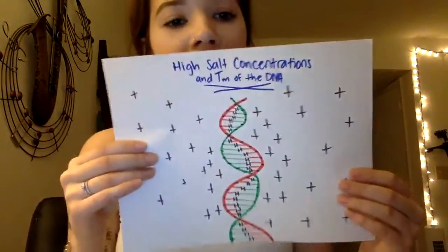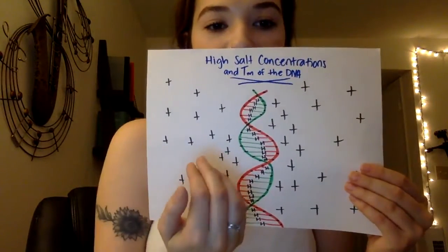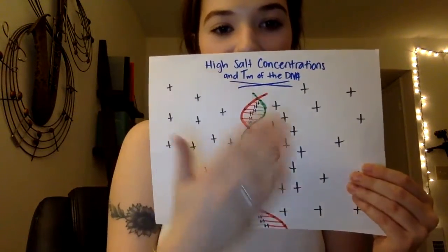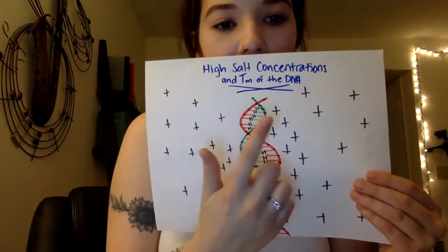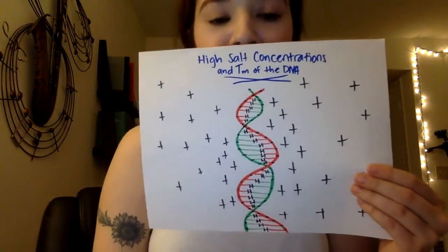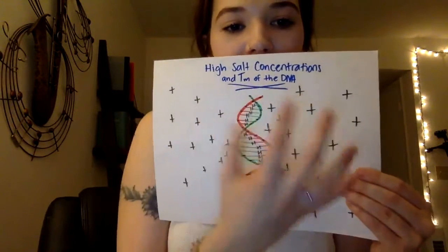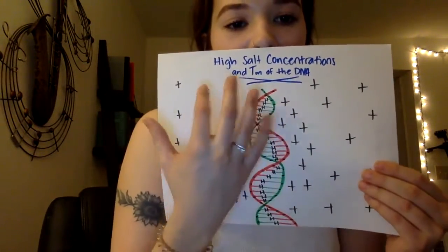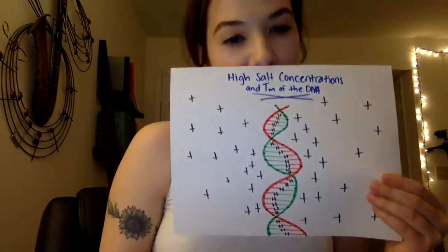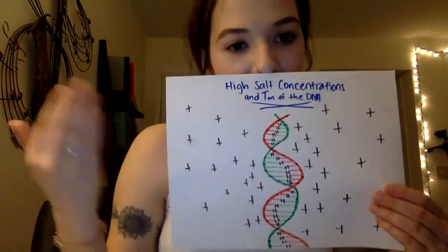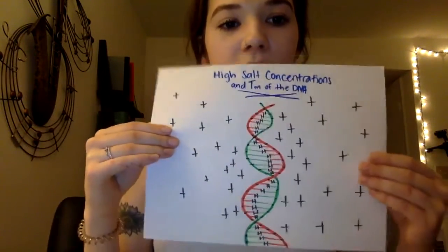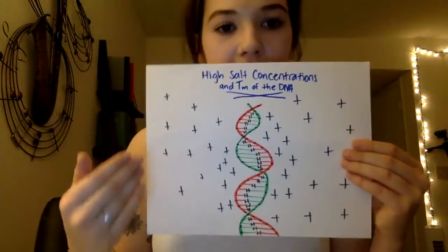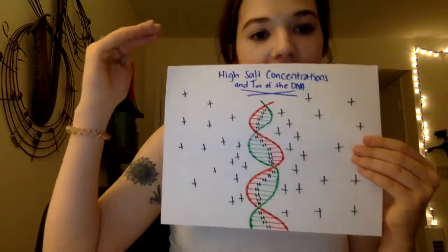Then I'm going to talk about high salt concentration in DNA. High salt concentration cancels out the negative charge of the phosphate backbone, and this makes the cation field basically make the entire molecule much more stable and it also increases the melting point. So as the salt concentration increases, the DNA becomes more stable and has a higher melting point.